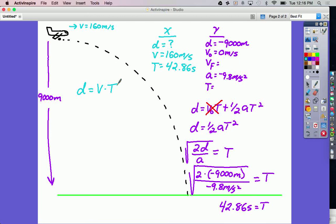No algebra needs to be done. It's already set up for what we're looking for. I just have to multiply my 160 meters per second, multiplied by 42.86 seconds. And I find out that the bomb is going to travel 6,857.6 meters before it lands on the ground below. So the plane better be that far ahead of its target when it drops the bomb.